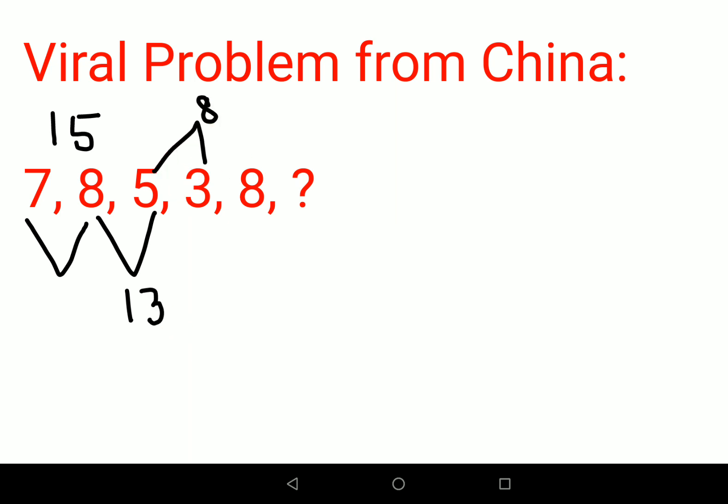Now if you see, there is a pattern emerging. Why? Because 7 plus 8 gets you 15 and the last digit of 15 is 5, which is followed over here. Then 8 plus 5 is 13 and the last digit is 3, which is followed over here. Now 5 plus 3 is 8 and it is a single digit, so it is followed by just 8.